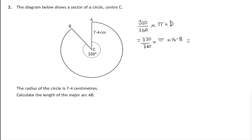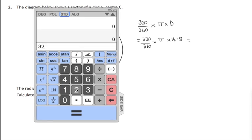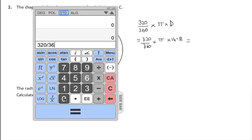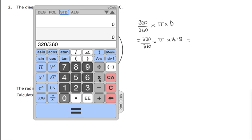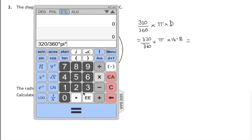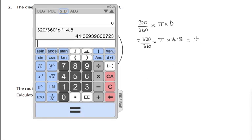So there's the calculation that we need to do. 320 divided by 360 times pi, let's use the pi button, times 14.8. And we get an answer of 41.329. Now there's no indication of the accuracy that they're requiring, so let's just approximate it to three significant figures.